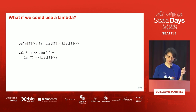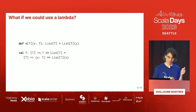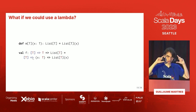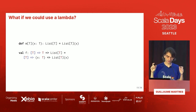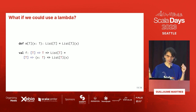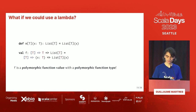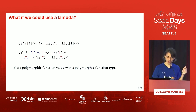We need some syntax that says this type parameter is an input of F. The syntax we came up with is a bracket-T arrow: [T] => ..., which means this is a function that also takes type parameters before the term parameters. F then is a polymorphic function value with a polymorphic function type.